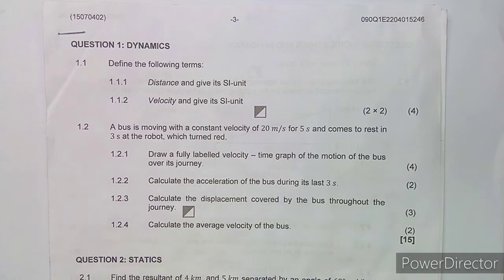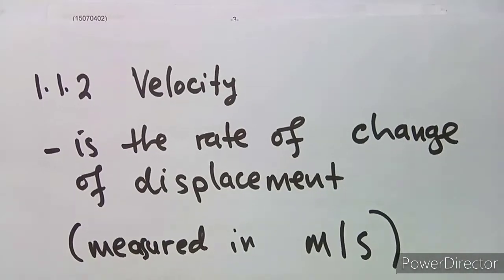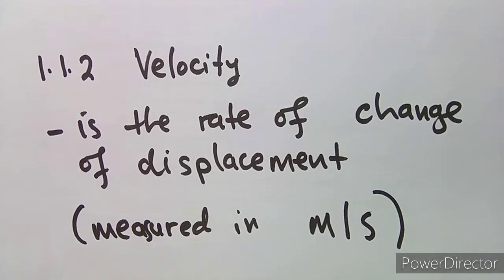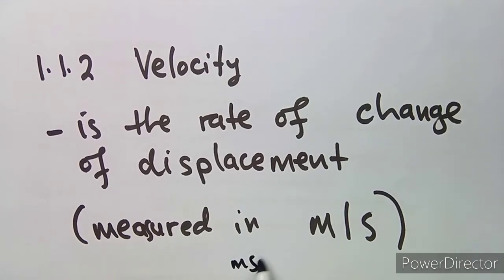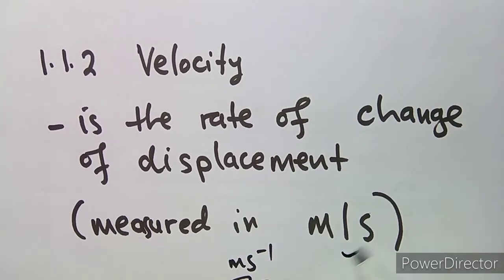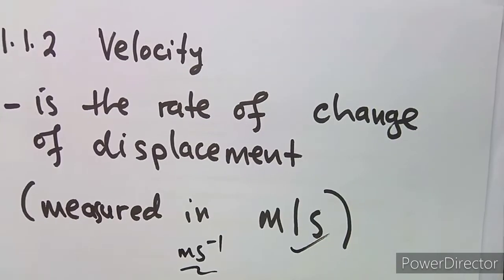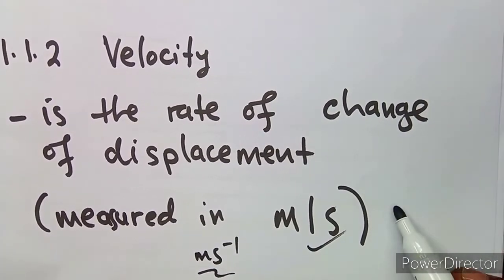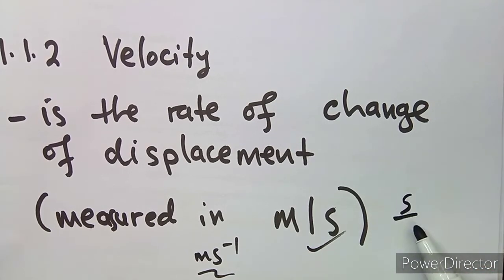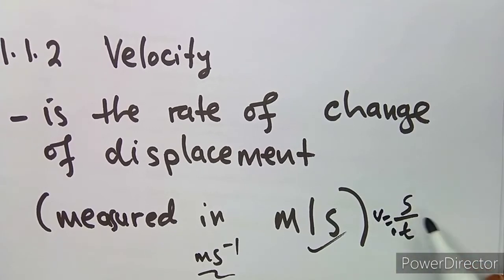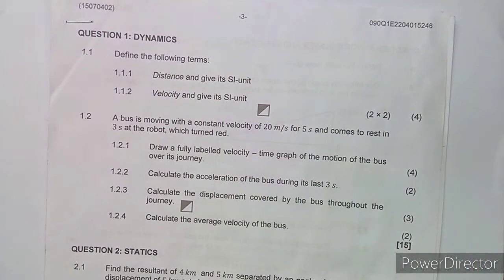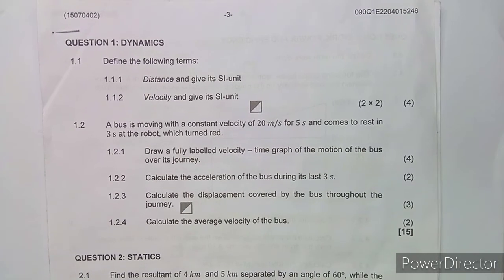Then velocity — we know that velocity is the rate of change of displacement. This is measured in meters per second, which can be written as m/s or m·s⁻¹. Velocity refers to displacement over the time taken.